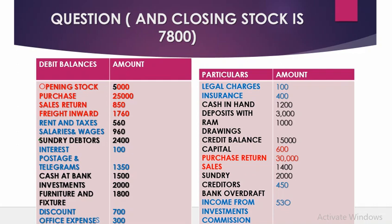Items belonging to the balance sheet include: sundry debtors, cash and bank, investments, furniture and fixtures, cash in hand, deposits, drawings, capital, sundry creditors, and bank overdraft.